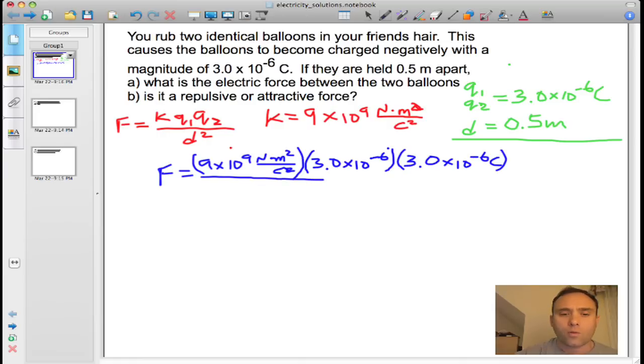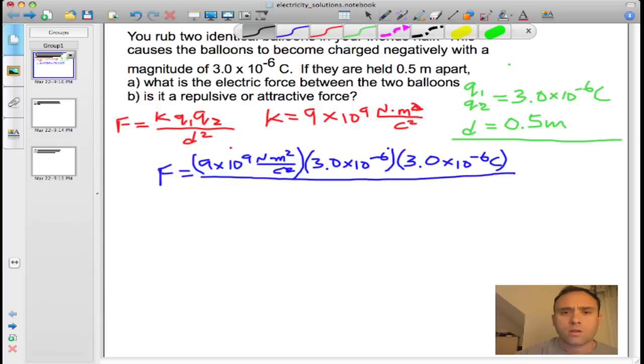And you divide that whole thing by the distance squared, which is 0.5 meters. So 0.5 meters squared.